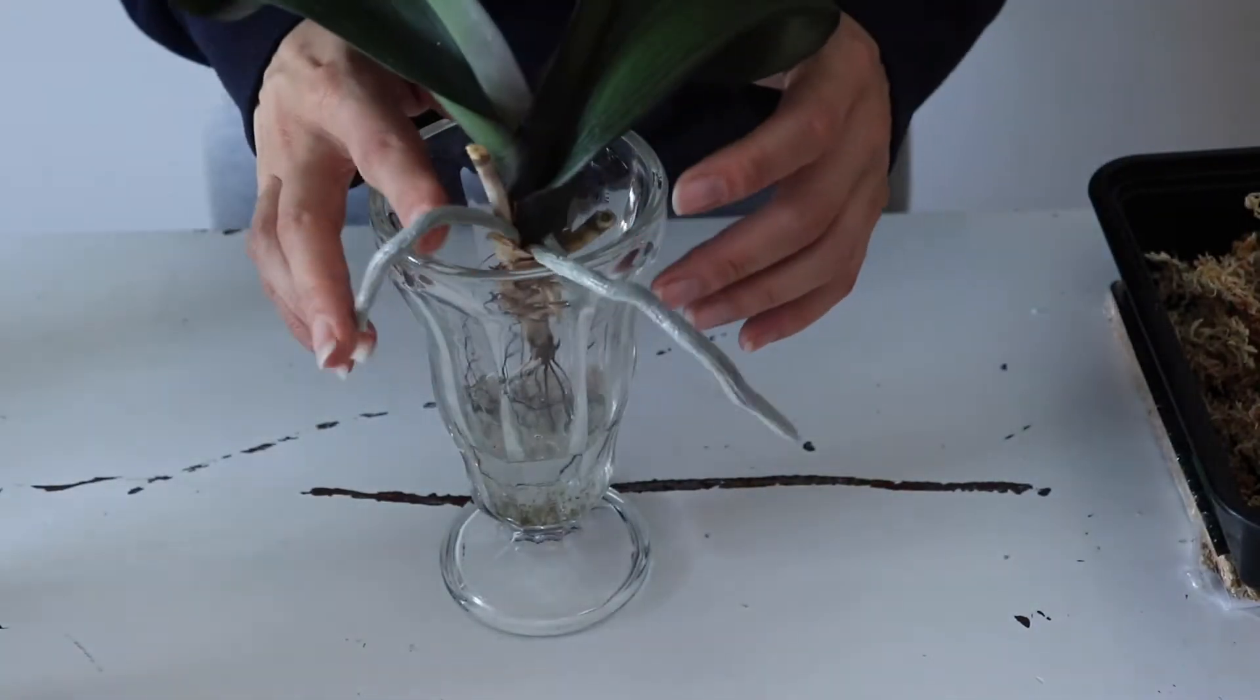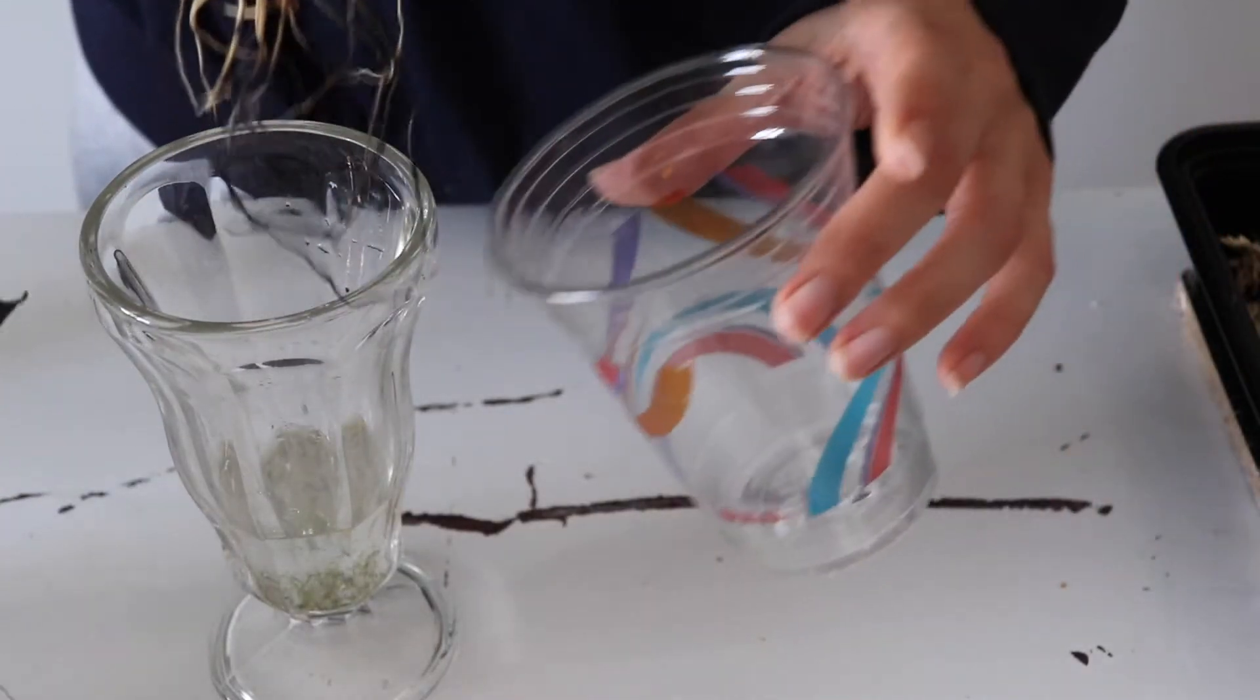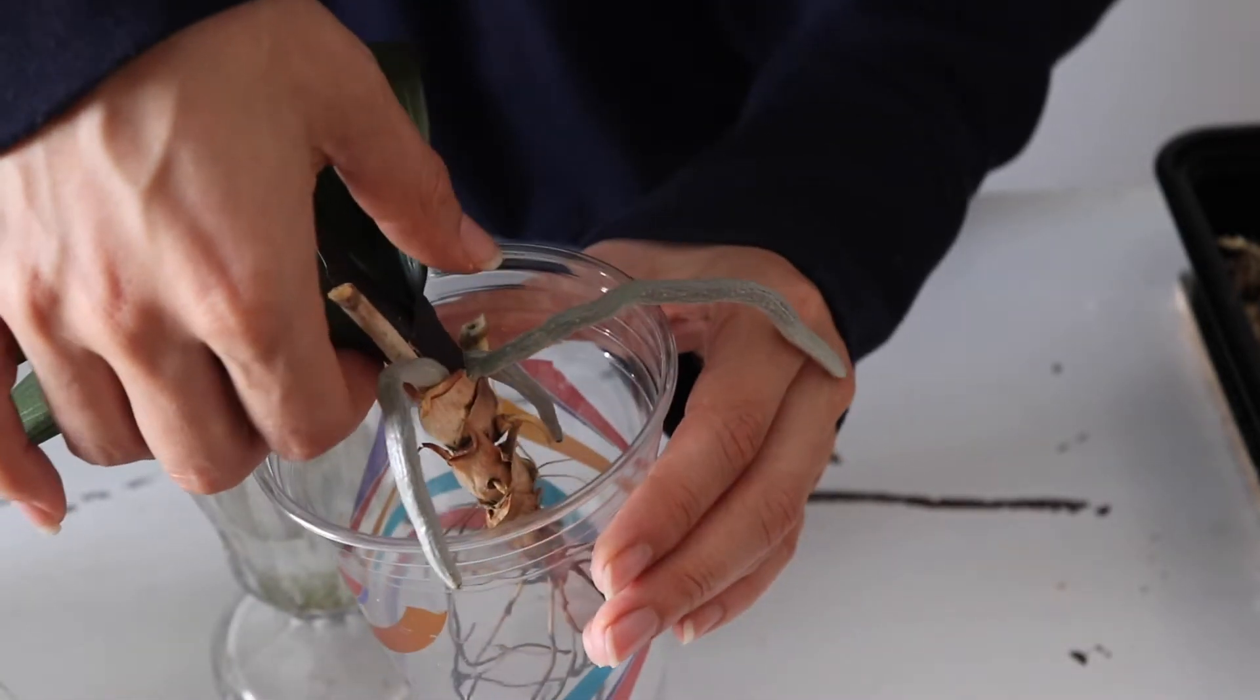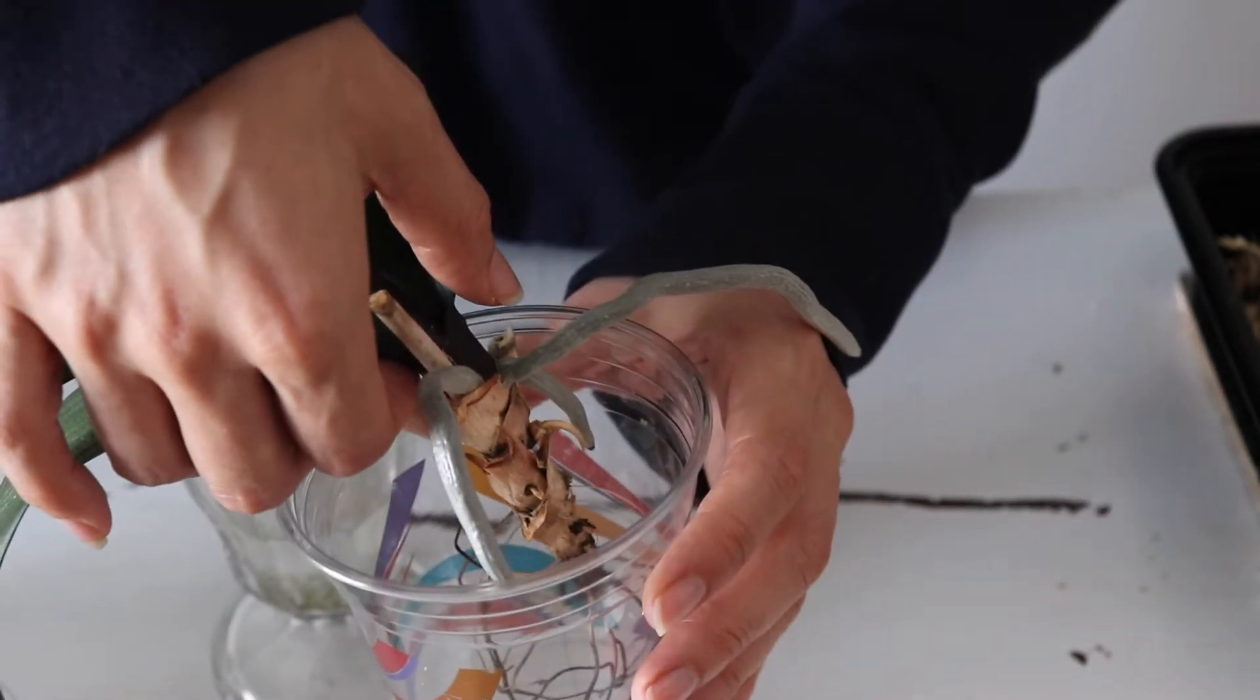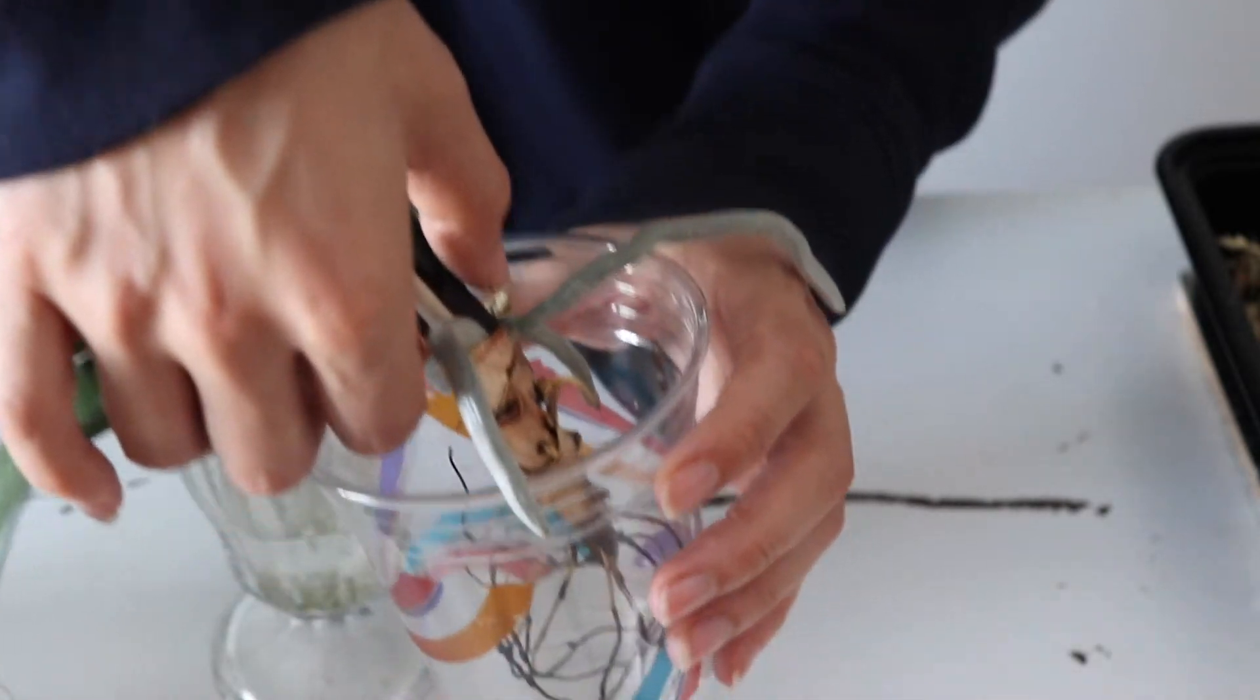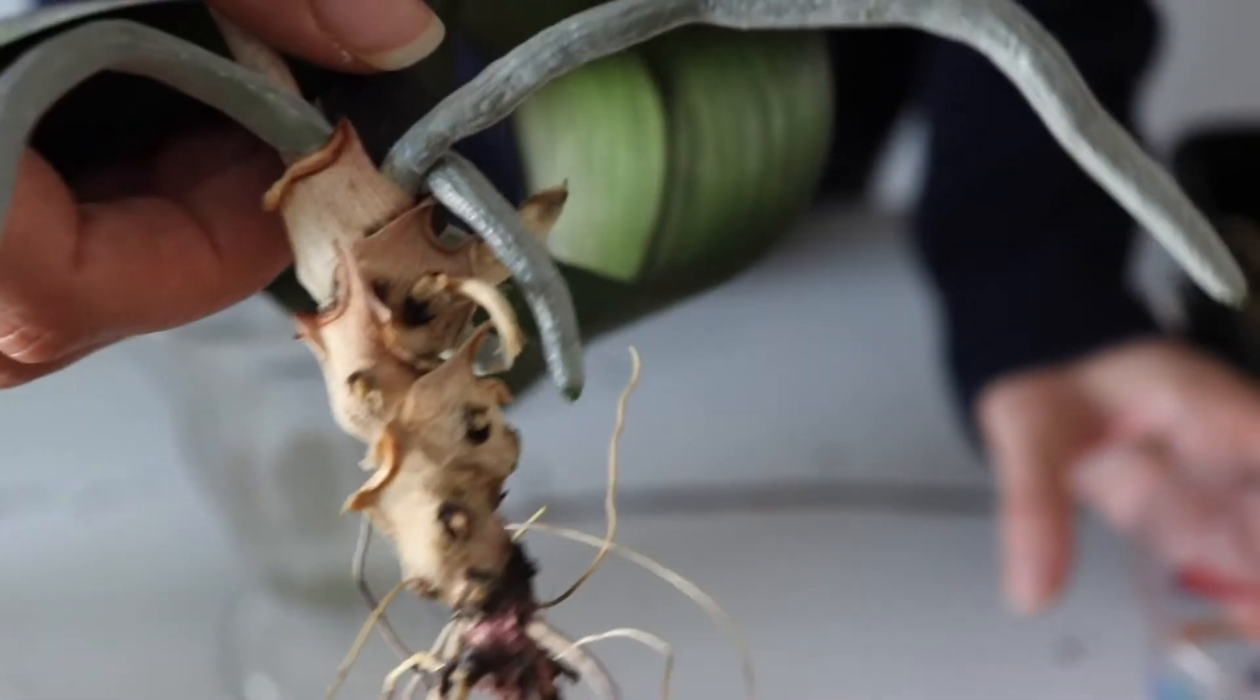By the time I got her out of the bark and put her into water culture, gradually she was still losing leaves. Where the roots rotted, this left me with a long dead stem, kind of looking like a skeleton.